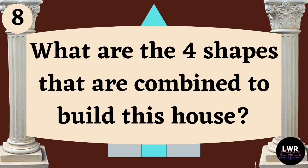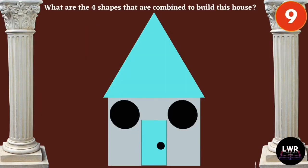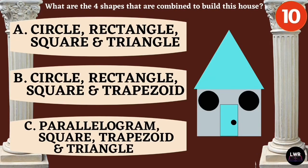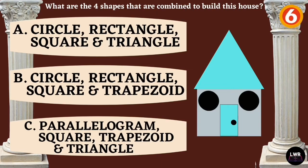Question number eight. What are the four shapes that are combined to build this house? Letter A: circle, rectangle, square, and triangle. Letter B: circle, rectangle, square, and trapezoid. Or letter C: parallelogram, square, trapezoid, and triangle.